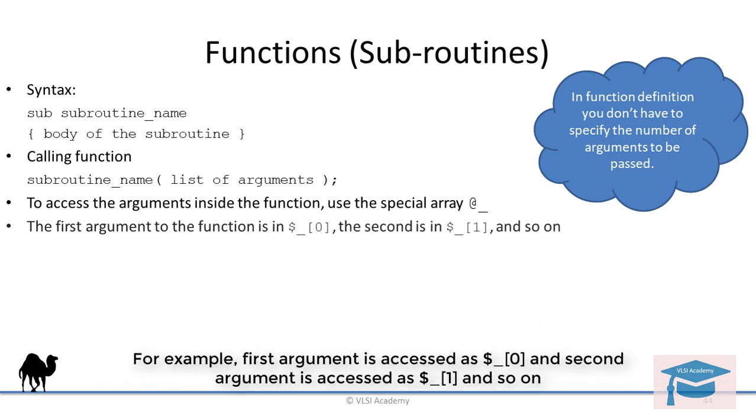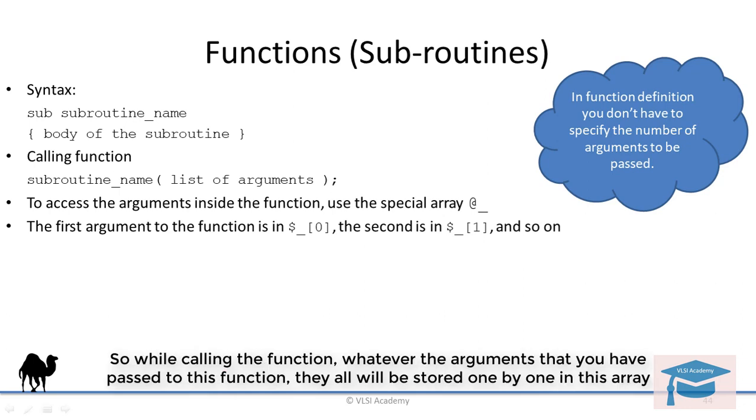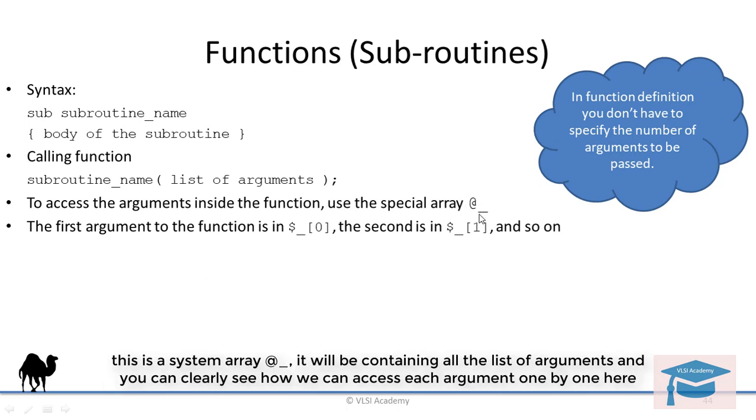For example, the first argument is $_[0] and the second argument will be $_[1] and so on. So while calling the function, whatever arguments you have passed to this function, they all will be stored one by one in this array. This is a system array, @_. It will contain all the list of arguments and you can clearly see how we can easily access each argument one by one here.